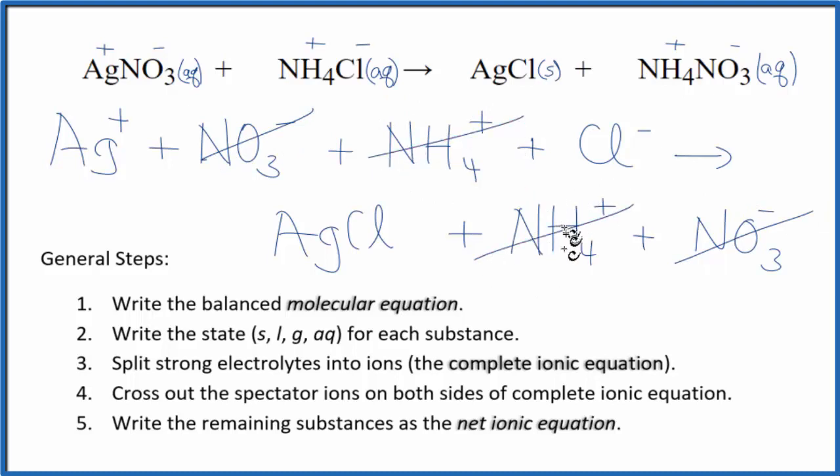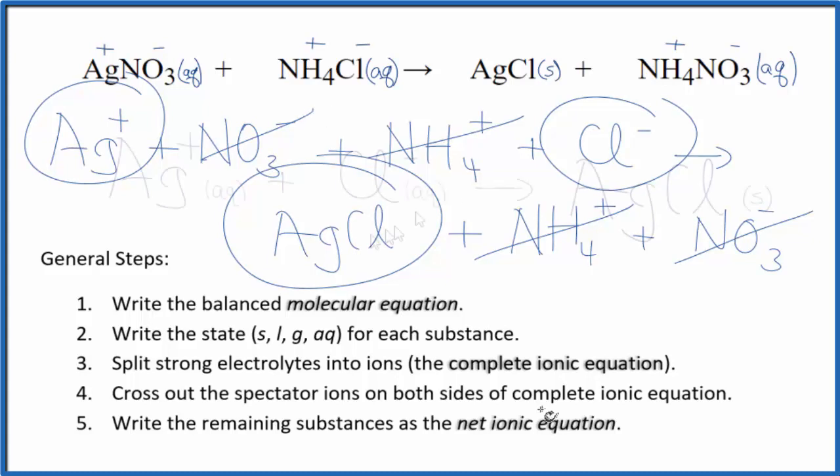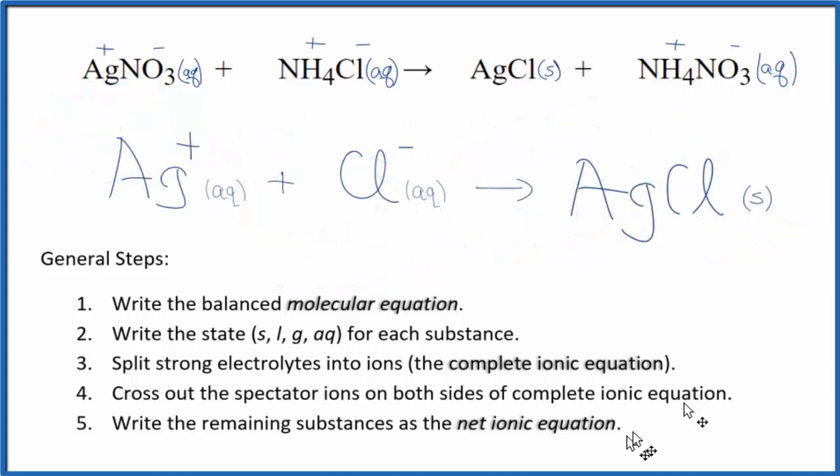What's left is the net ionic equation. Ag plus plus Cl minus gives us AgCl. Let me clean this up and put the states in and we'll have the net ionic equation for silver nitrate plus ammonium chloride. And this is the net ionic equation for AgNO3 plus NH4Cl.